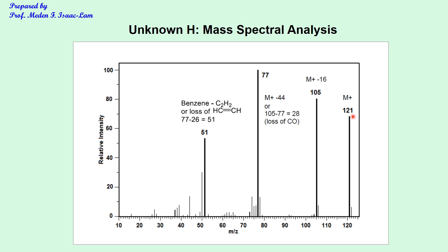For our examples, we will have either one nitrogen or no nitrogen. If the molecular weight is odd, you have one nitrogen; if it is even, you have no nitrogen. The molecular weight of this molecule is 121. The fragments are 121 minus 16, giving 105, and 121 minus 44, giving 77.